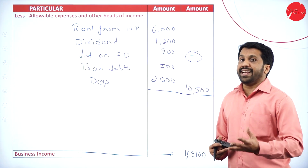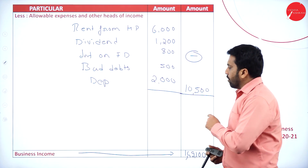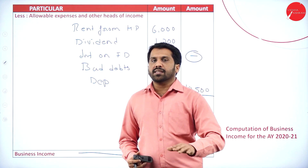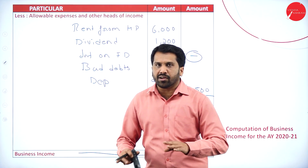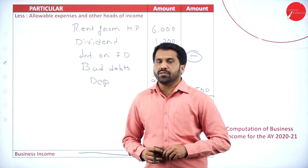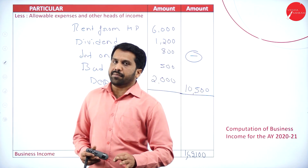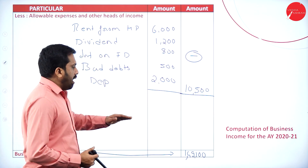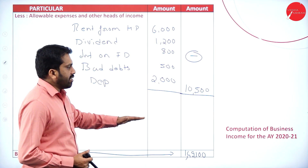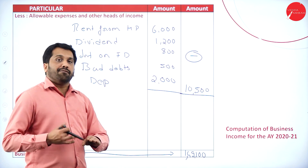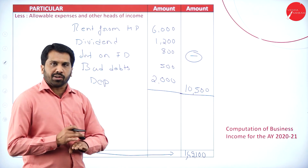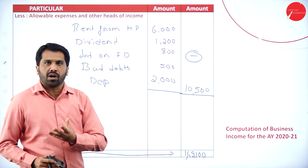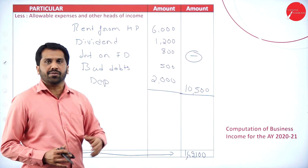Remember, in your examination you will get up to this point. For your BCom or BBA examination, up to business income is what you are supposed to do. Further computation is not required — but for the safer side, if you want to know how to do it, I will show that.